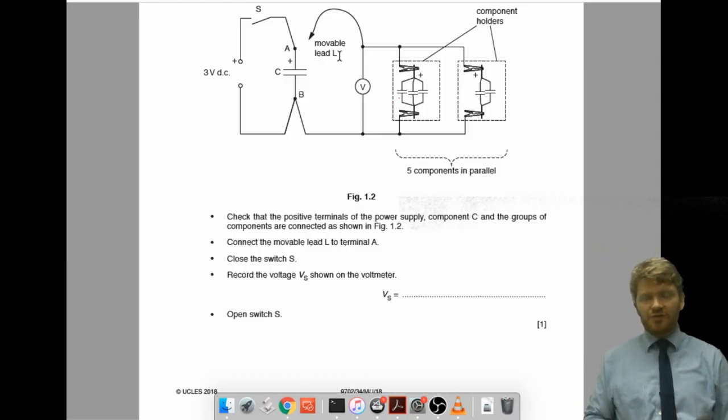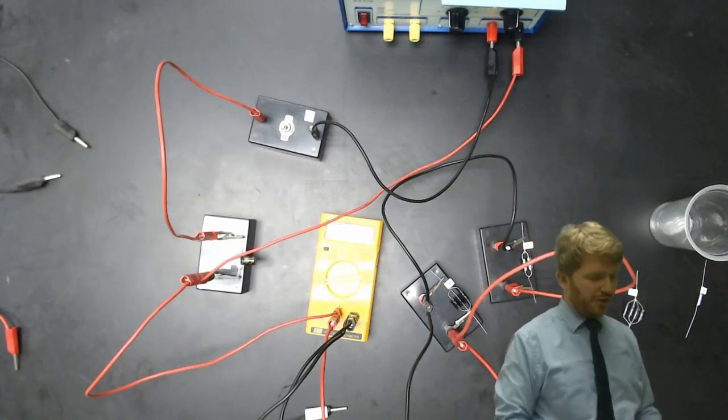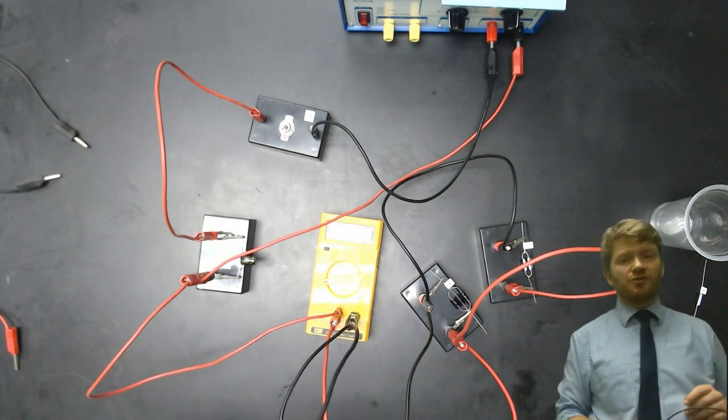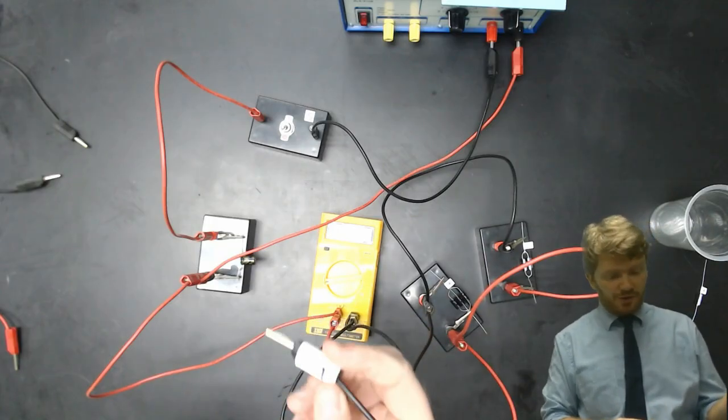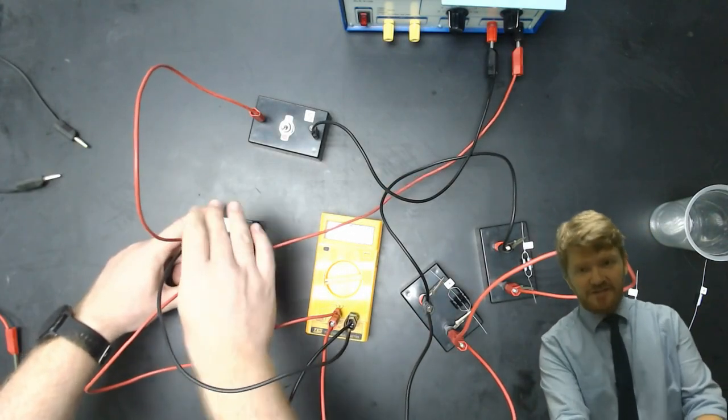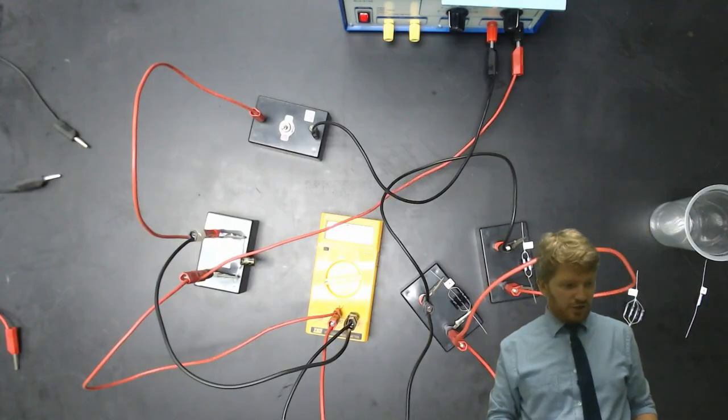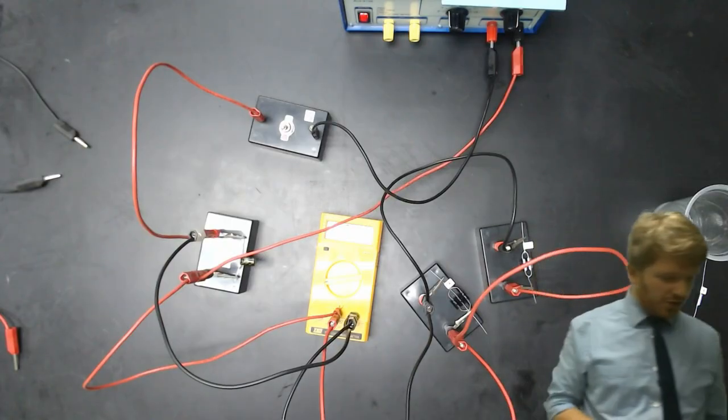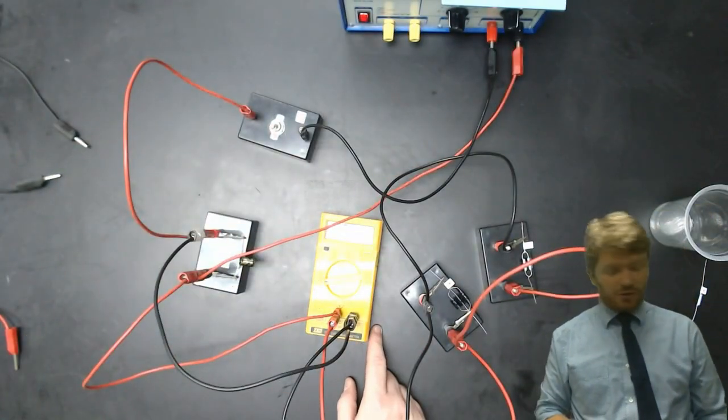Then it says, connect movable lead L to terminal A, close switch S, and record the voltage VS shown on the voltmeter. So, this is not the easiest thing to do. It might be a good idea to have the instructions ready. So, it says, connect movable lead L, that's that one, to terminal A. Check it on here. That's it connected. Let's make sure my power supply's on as well. And then it says, close switch S. So, that is now closed.